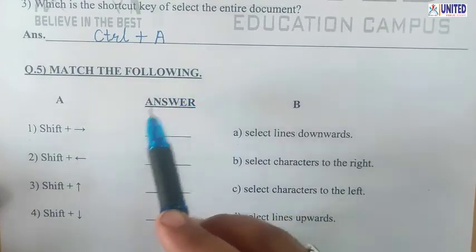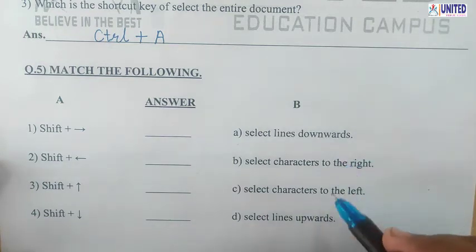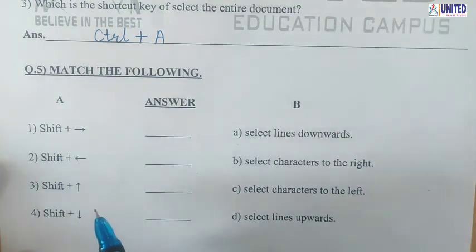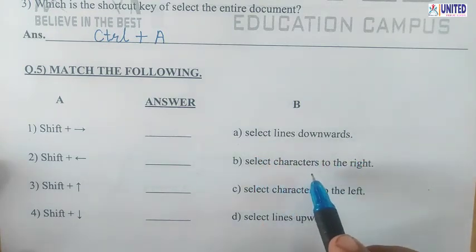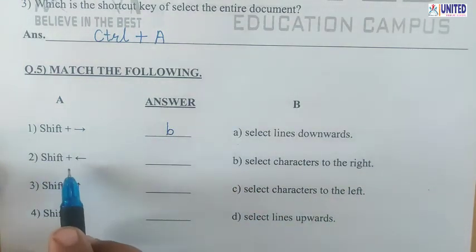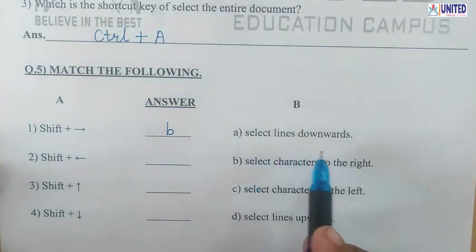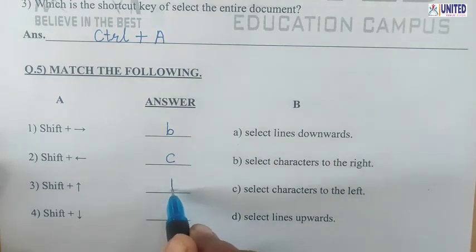Question number 5: Match the following. In column A, shortcut keys are given; in column B, their uses are given. Number 1: Shift+Right Arrow — the answer is B: Select the characters to the right. Number 2: Shift+Left Arrow key — the answer is C: Select the characters to the left. Number 3: Shift+Up Arrow key — the answer is D: Select the lines upwards.